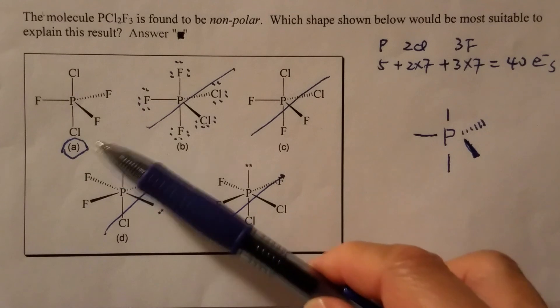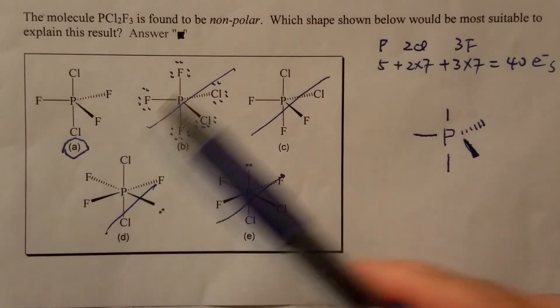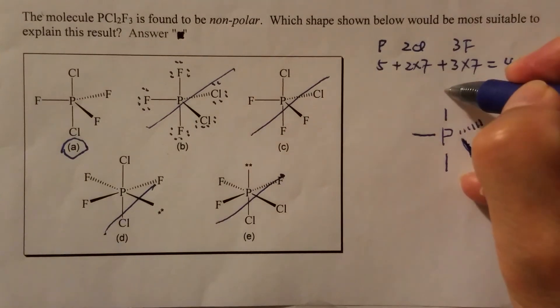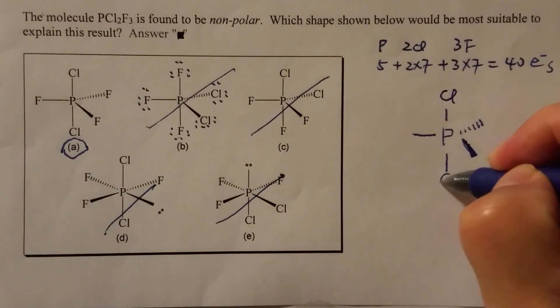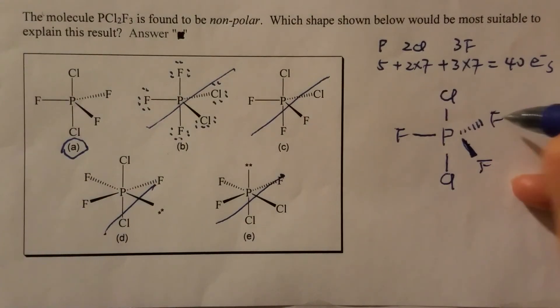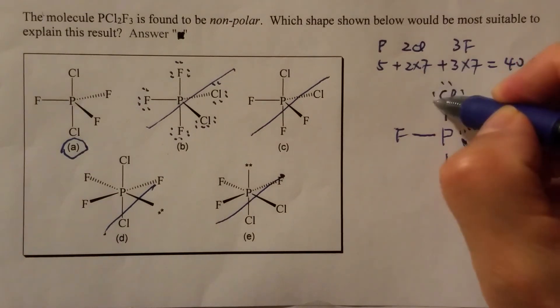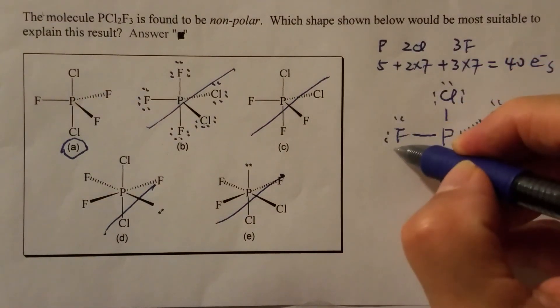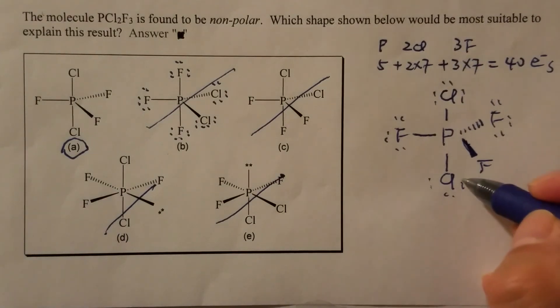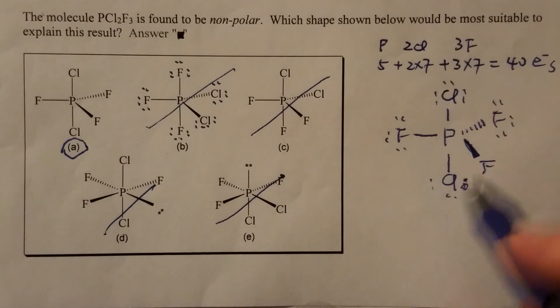Therefore, A is the correct answer. So if you want to complete this, that should be Cl, Cl, F, F, F. And then, of course, you can complete the lone pair assignment. And the total number of valence electrons assigned, 5 times 8, 40.